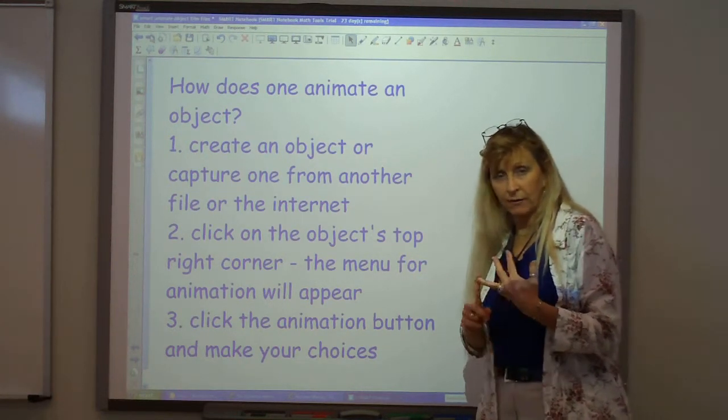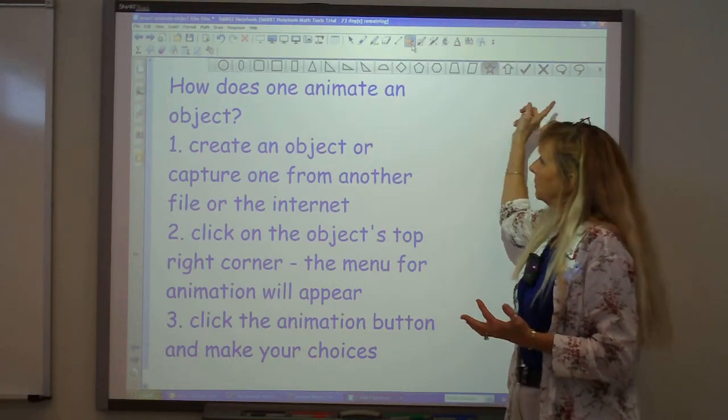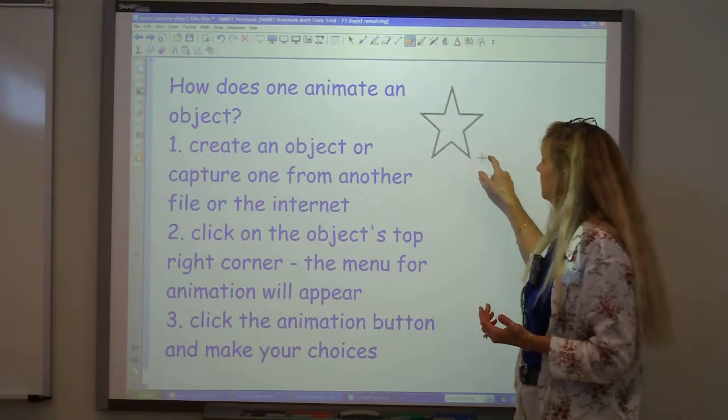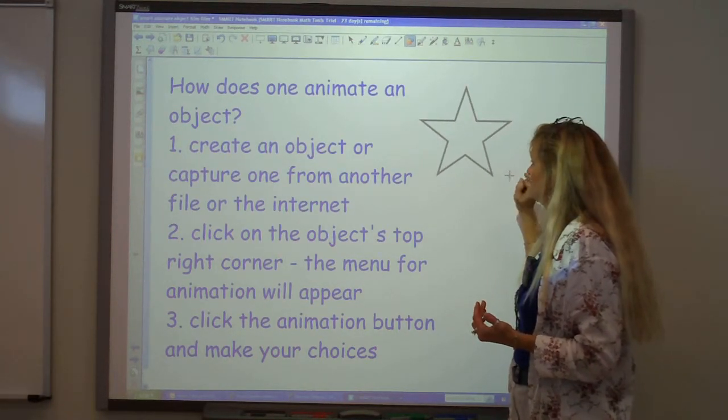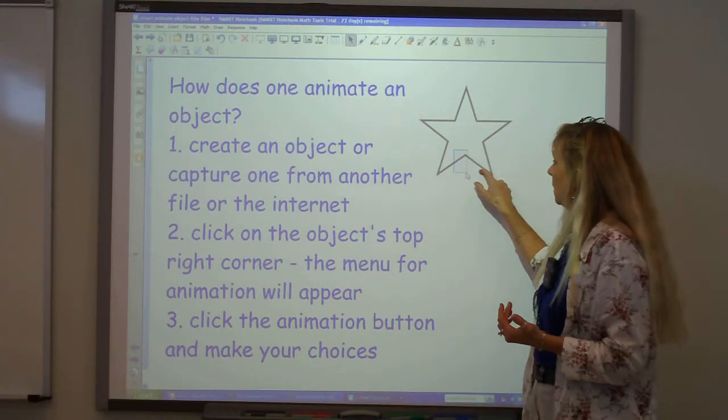For our purposes right now, we're going to create an image. We'll take the Shape tool. We'll pick a star. And there's our star. Click on the cursor button again. And this is now your object.